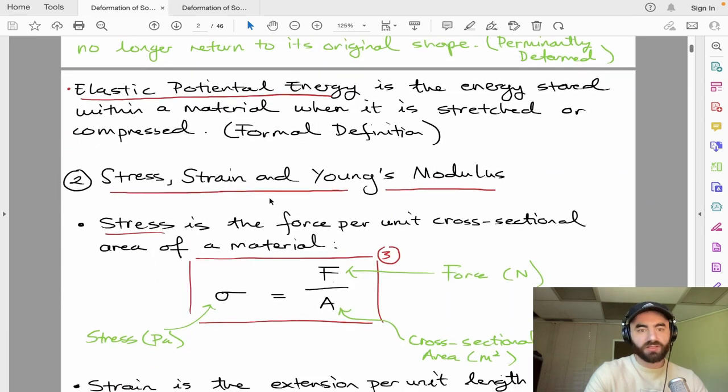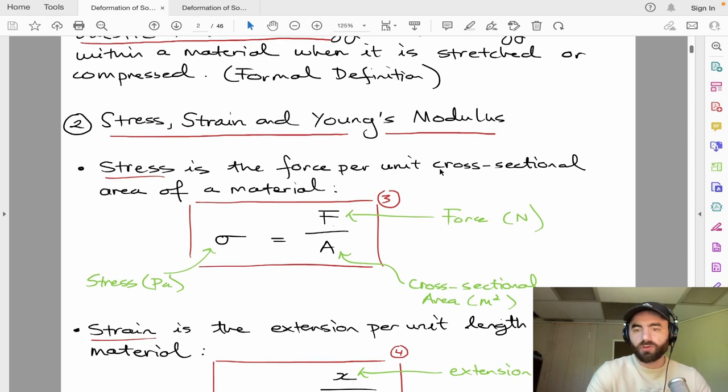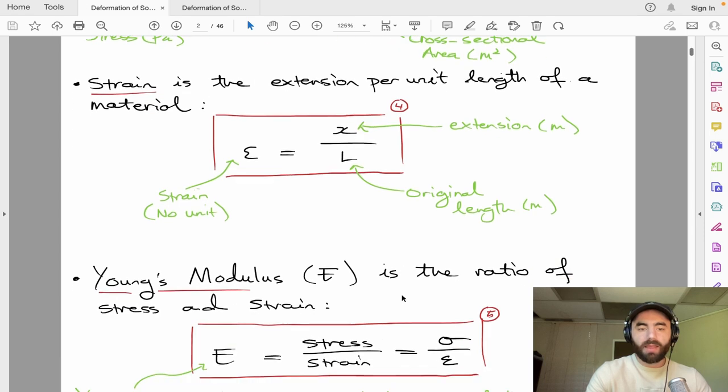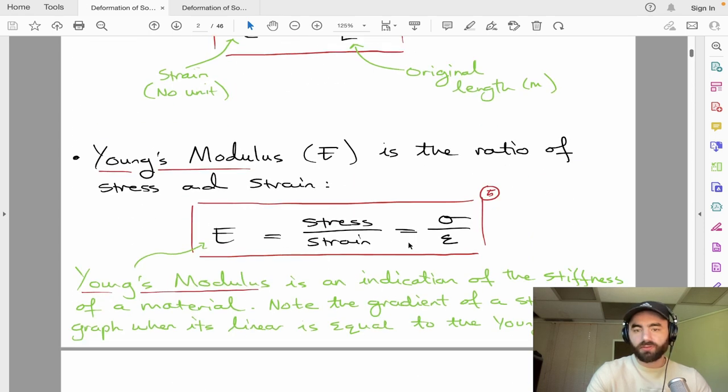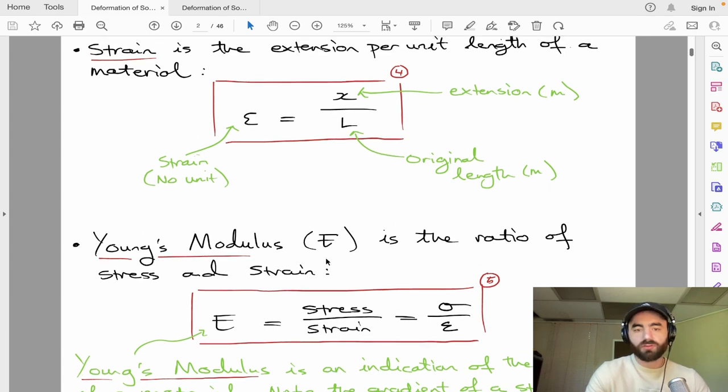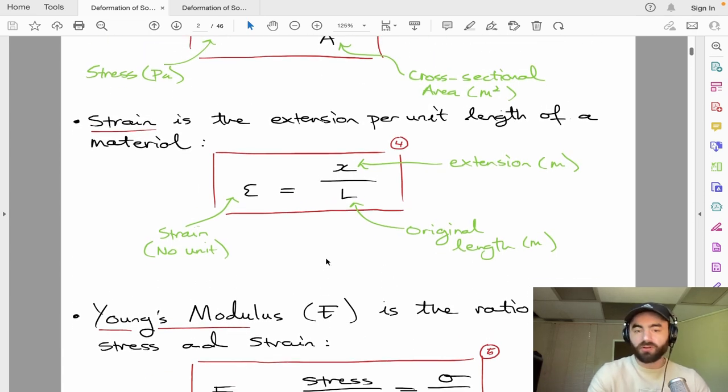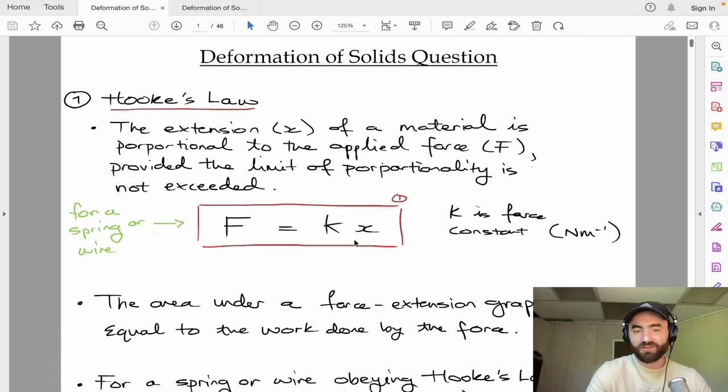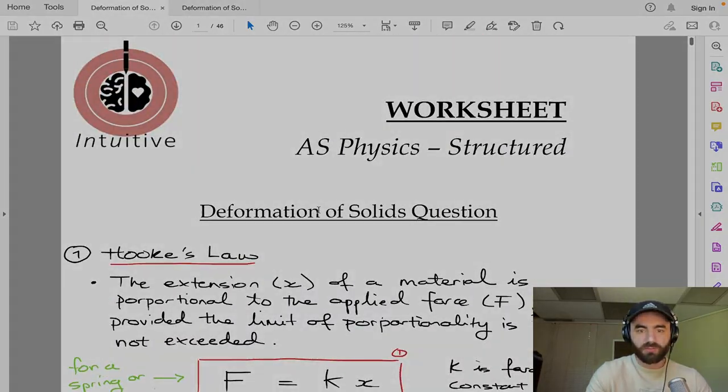Then we have stress, strain, and Young's modulus. These are properties of the material. Stress is force per unit cross-sectional area of the material, sometimes like pressure. Strain is the extension divided by the length. These two things divided by each other - stress divided by strain - is called the Young's modulus of the material. Young's modulus is an indication of how stiff a material is. That's it - let's jump into some questions.